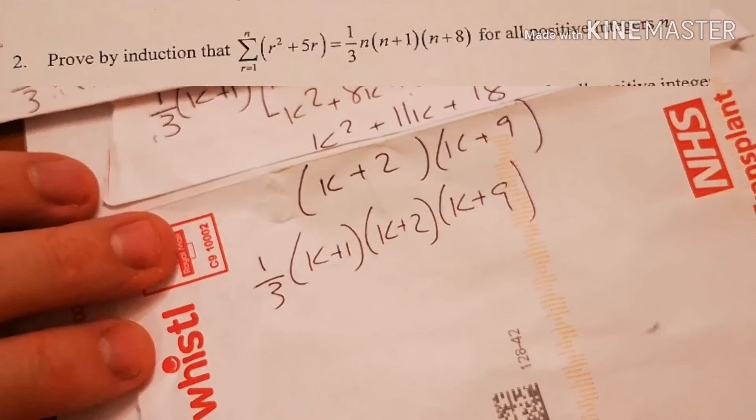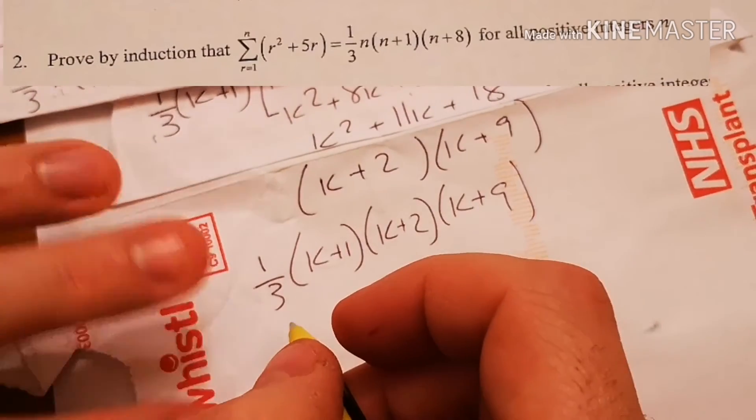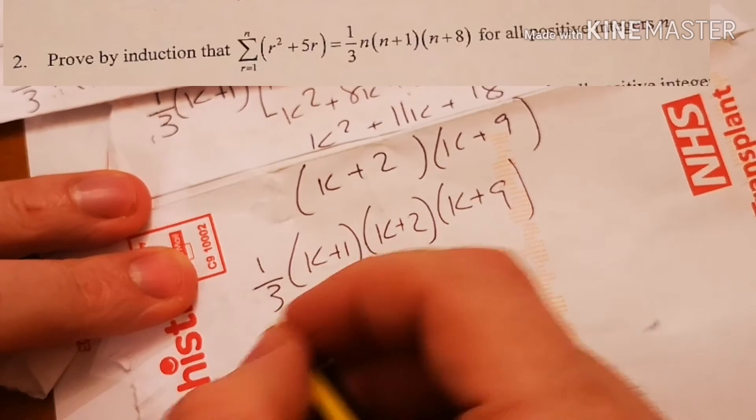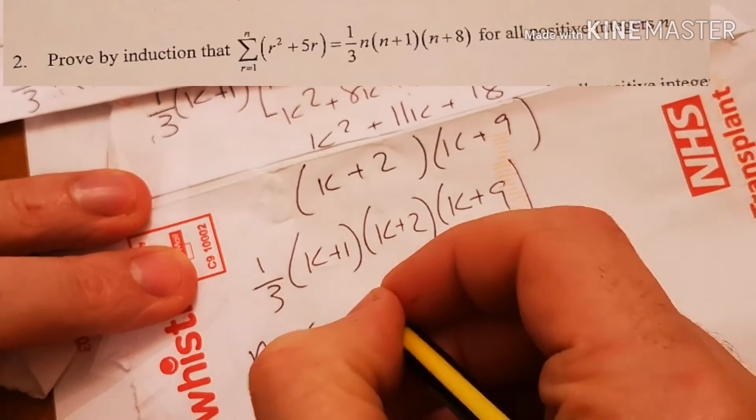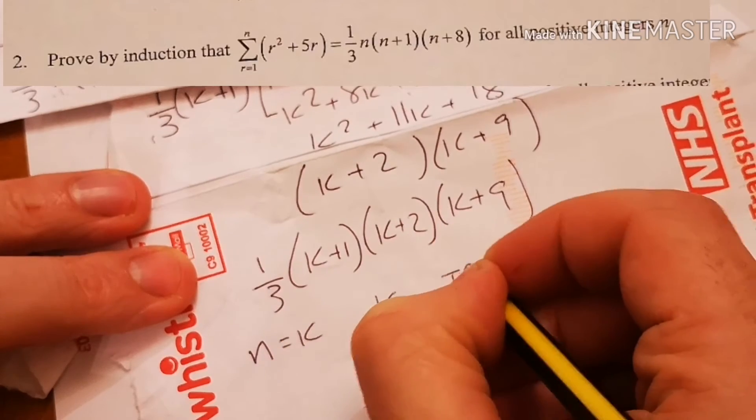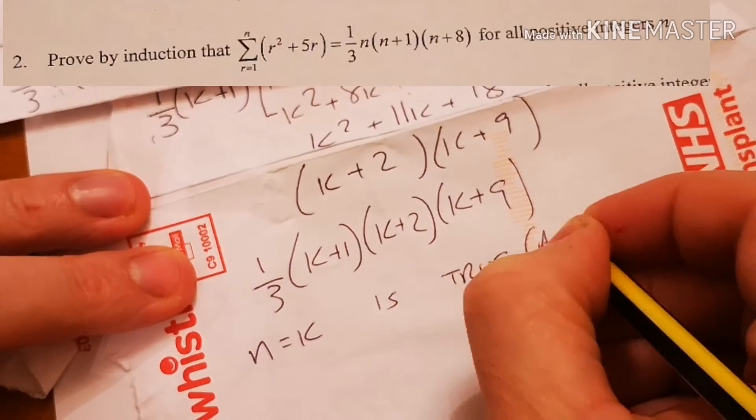Okay. Now you've got your writing a little sentence, which is, right, so, n equals k is true. It's assumed because I'm writing it weird.